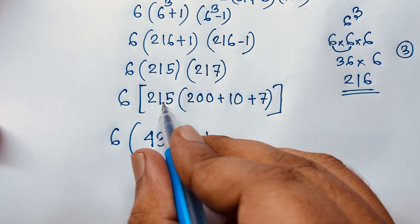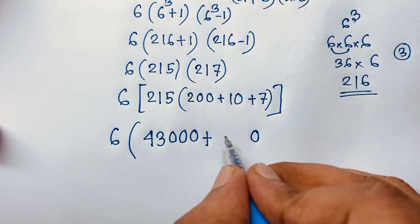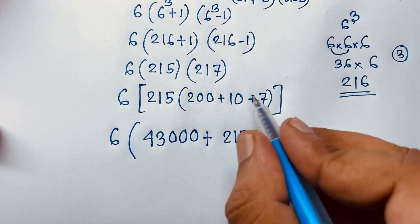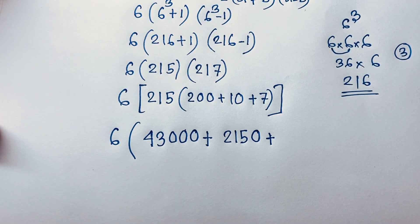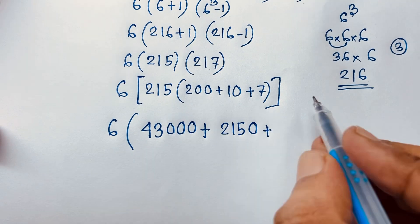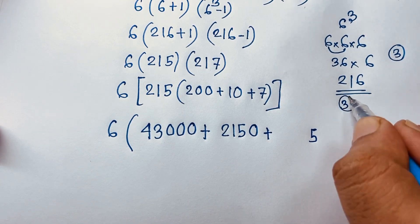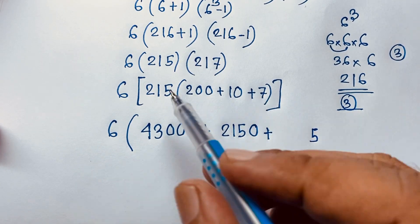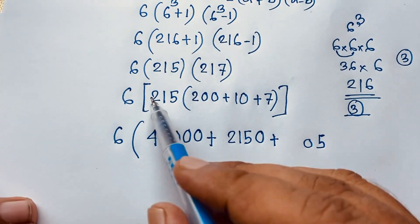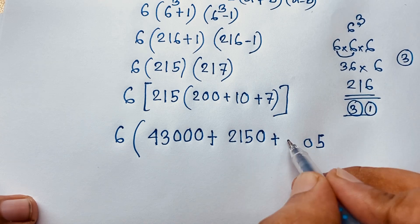Then 10 times 215 equals 2,150. Next, 7 times 215: 7 times 5 is 35, carry 3; 7 times 1 is 7 plus 3 equals 10, carry 1; 7 times 2 is 14 plus 1 equals 15. So 7 times 215 equals 1,505.